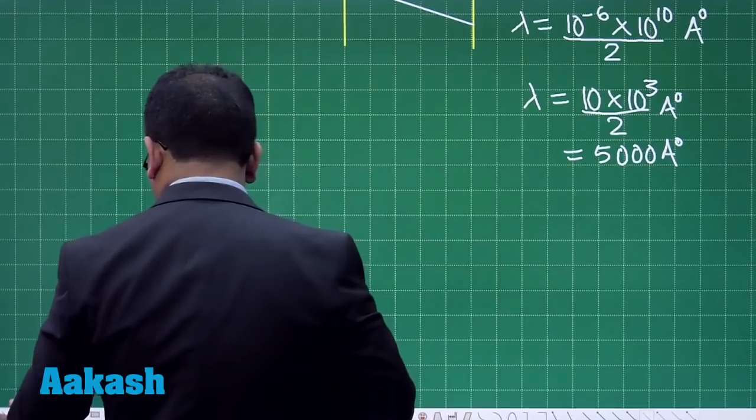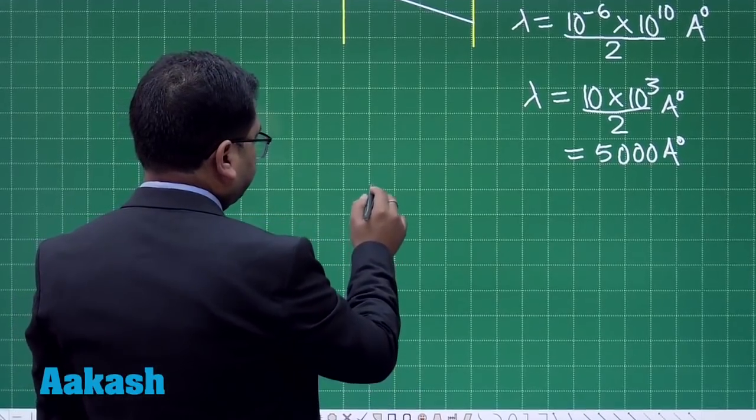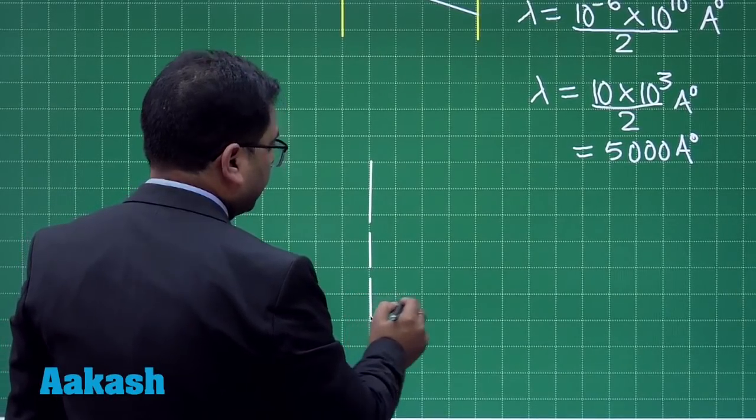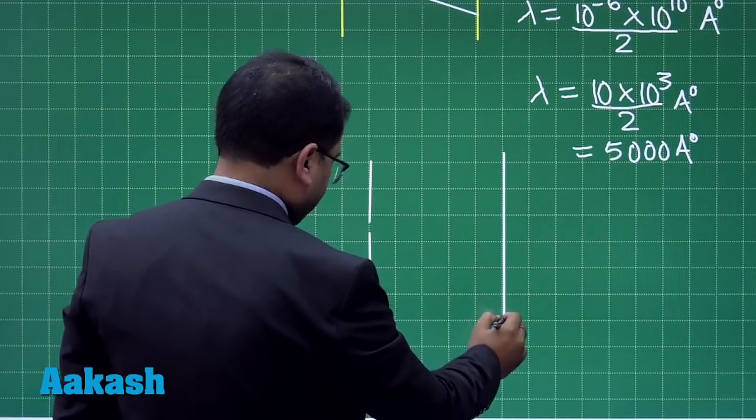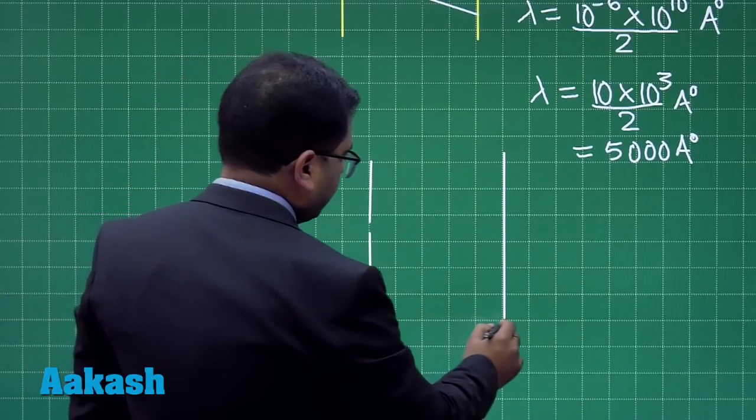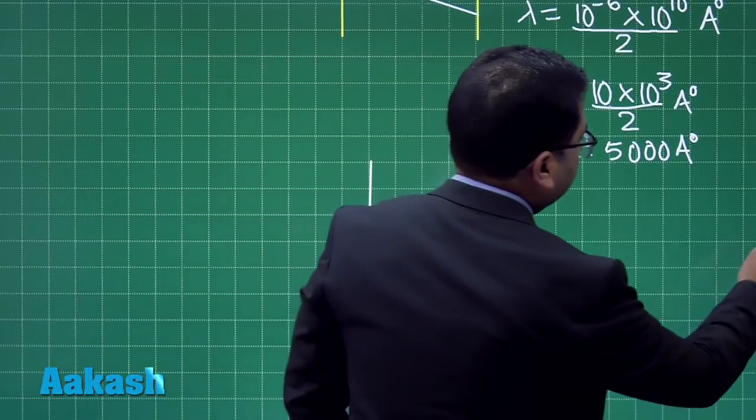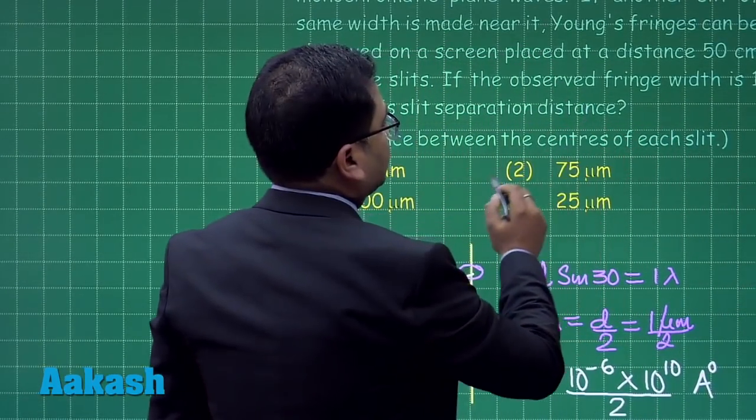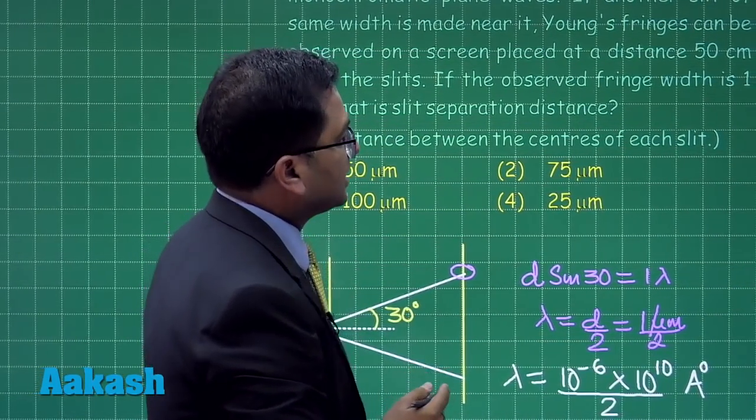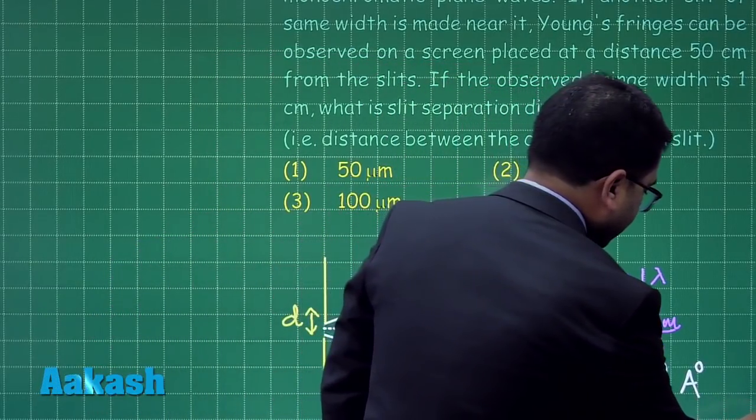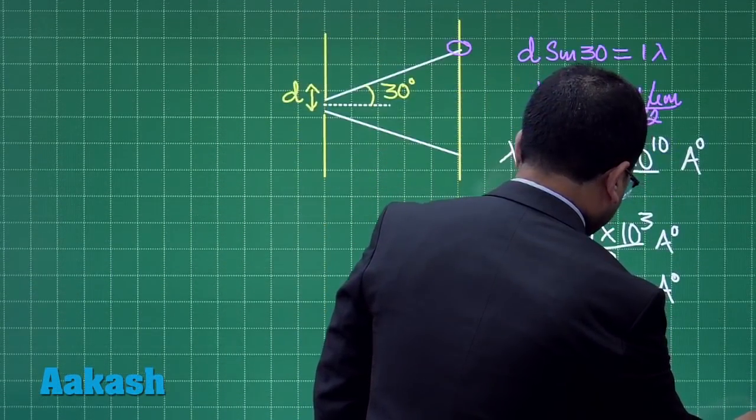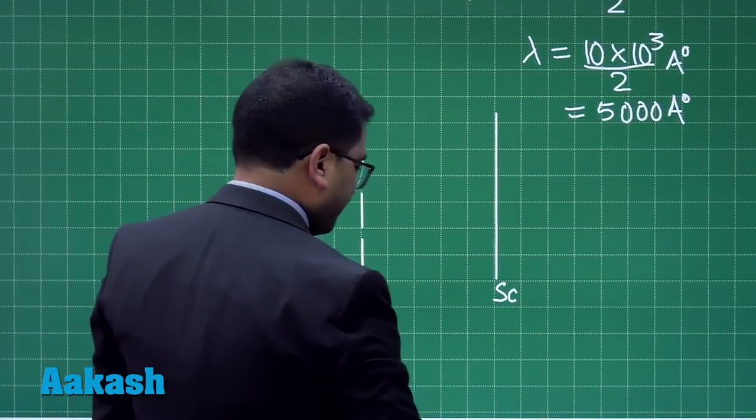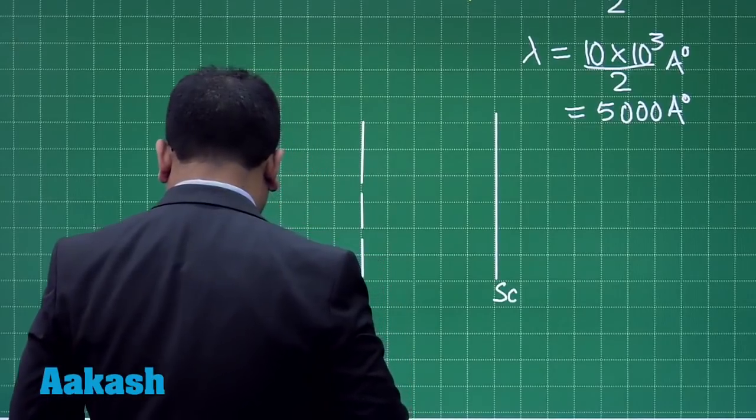In other words, there is a screen which is 50 centimeters from the slits. I will make a Young's double slit experiment here, and this is the regular pattern, and here is the screen. The slit to screen distance is 50 centimeters.